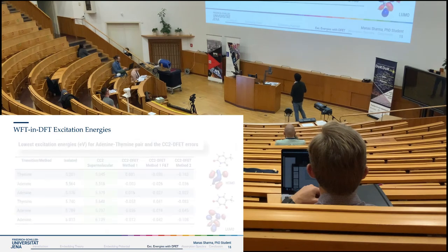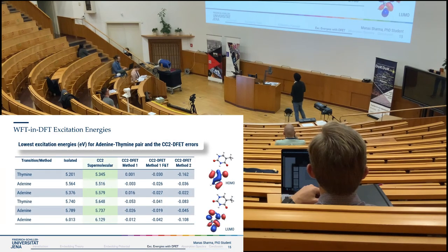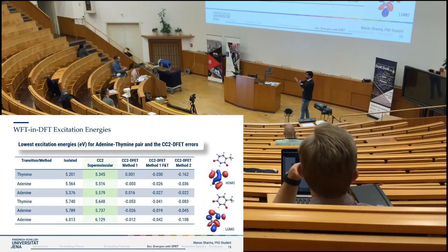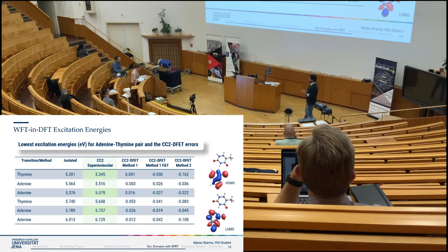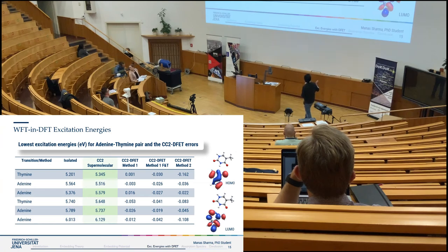Next, for an ethylene-thymine base pair, I look at the first six excitation energies. The green column again shows reference energies when the total system is treated at a high level of theory. The same trend holds: Method 1 gives really low errors with a maximum of 0.053 eV, the Method 1 variant is slightly worse, and Method 2 is the worst. The computational cost reduction is significant — if you run the calculation on only one molecule instead of both and consider the N to the power 5 scaling, you gain great efficiency.